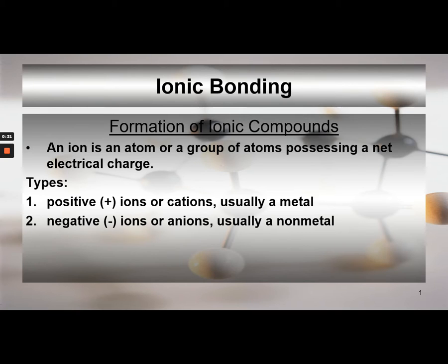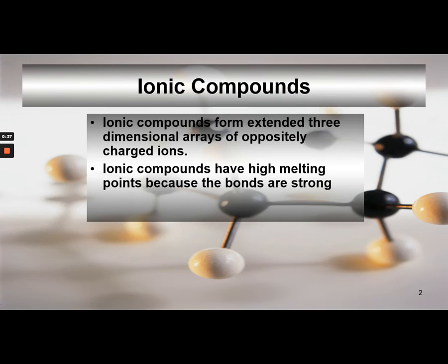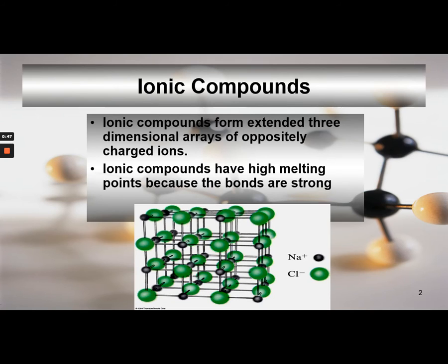That happens when you have the transfer of electrons from a metal to a nonmetal. Ionic compounds are unique in that they form three-dimensional arrays of oppositely charged ions. They have very high melting points because the bonds are strong.